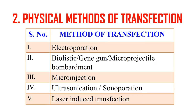Next, physical methods of transfection. These generally include electroporation; gene gun, also known as biolistic or microprojectile bombardment; microinjection; ultrasonication or sonoporation; and laser-induced transfection.